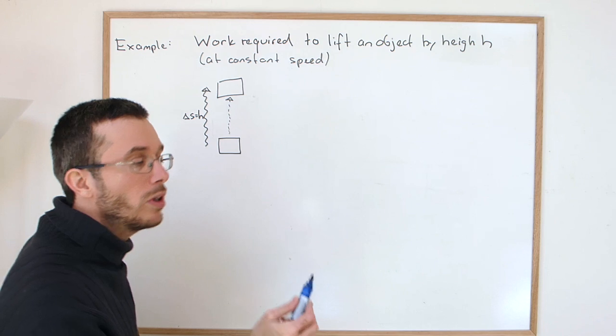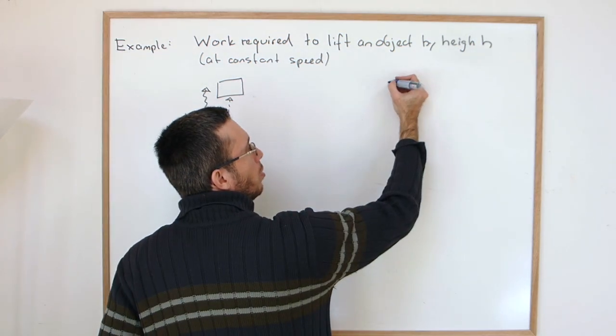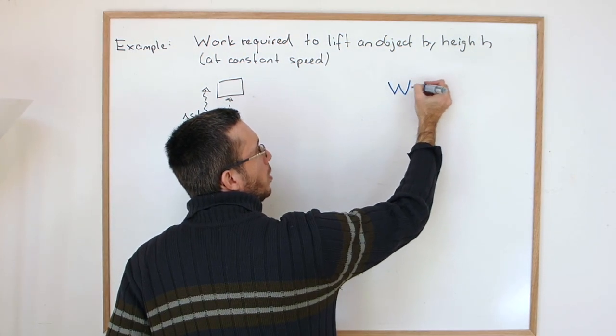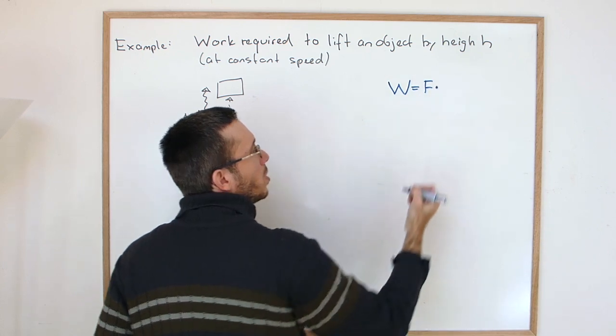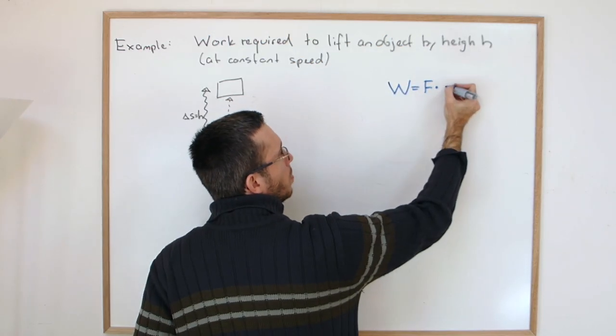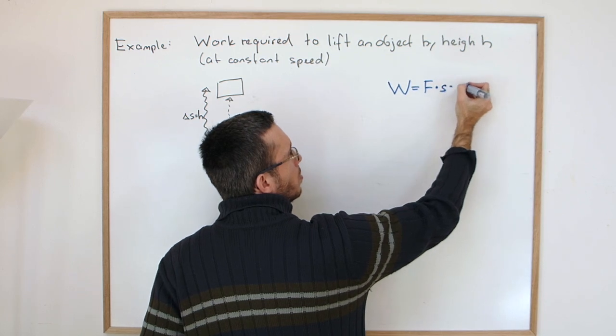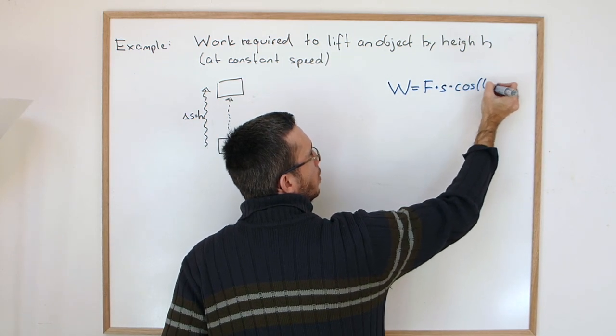So remember the work formula. How do we calculate the work formula? Work is the force times a displacement times cosine of the angle in between.